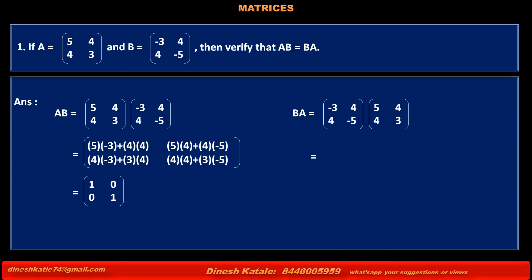Multiplying elements of the first row of matrix B by the corresponding elements of the first column of matrix A, we get minus 3 into 5 plus 4 into 4. Multiplying elements of the first row of matrix B by the corresponding elements of the second column of matrix A, we get minus 3 into 4 plus 4 into 3.